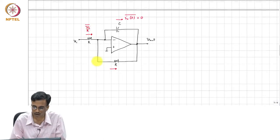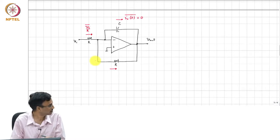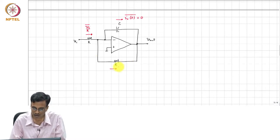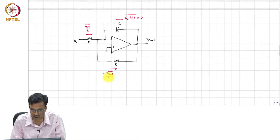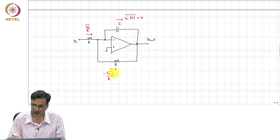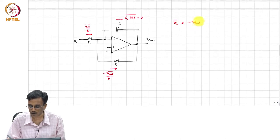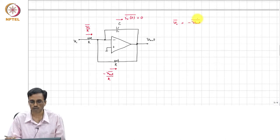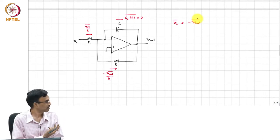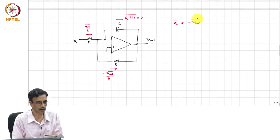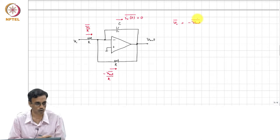What is the current flowing through the feedback resistor? It is V_out minus V_out by R. Because the average current through the capacitor is 0, it must follow that V_I average equals minus the average value of V_R. All that this is saying is the DC gain is minus 1. So, there is nothing new here.